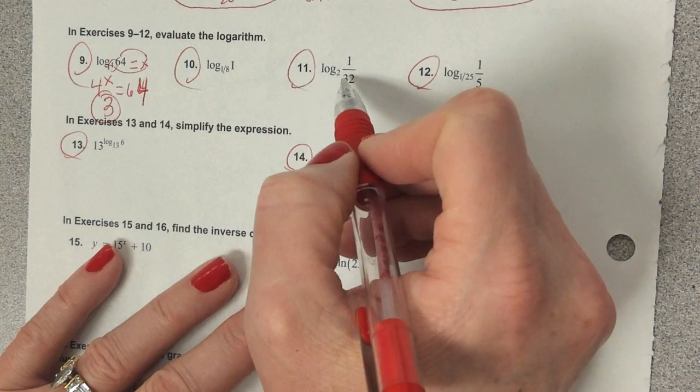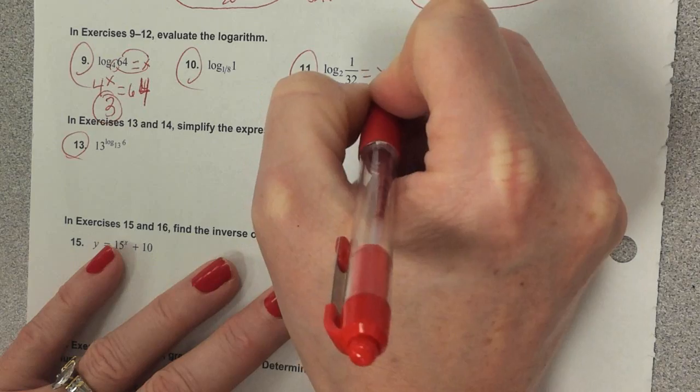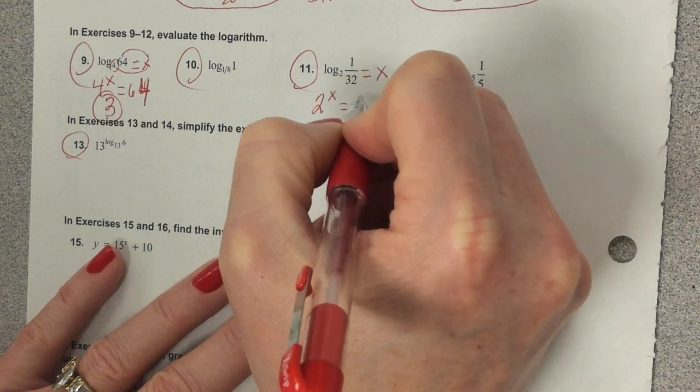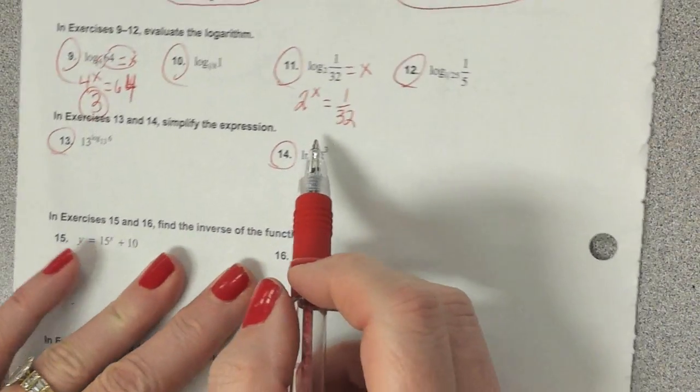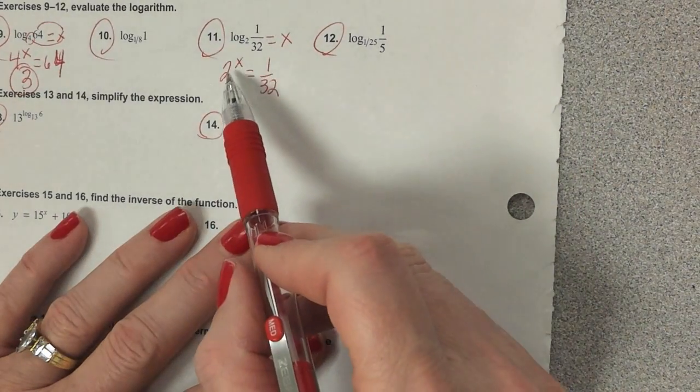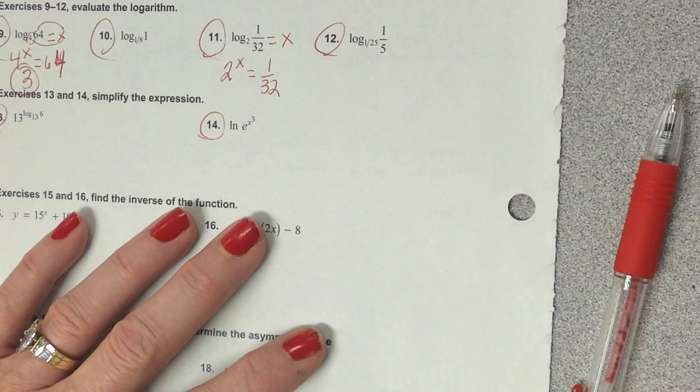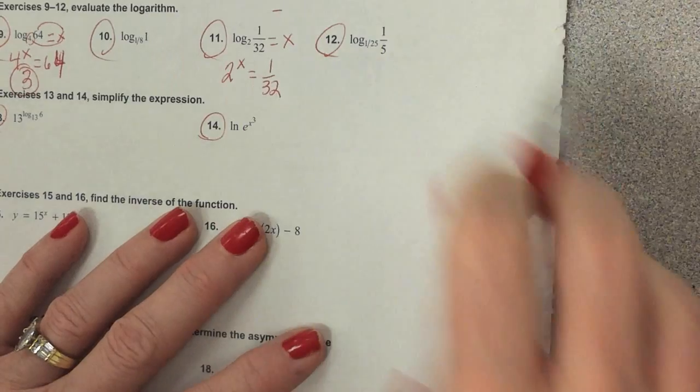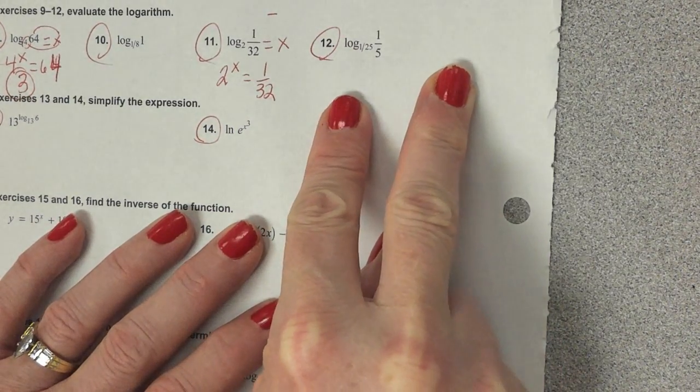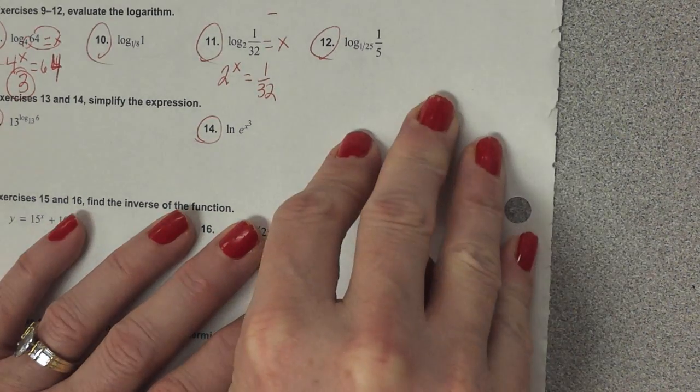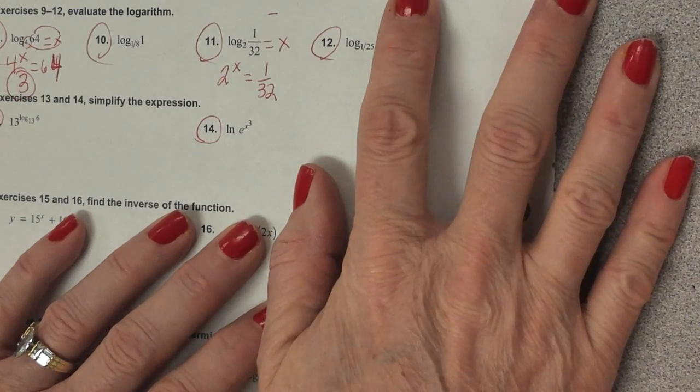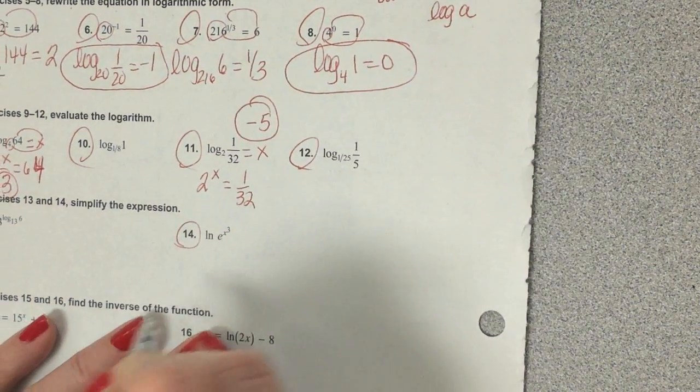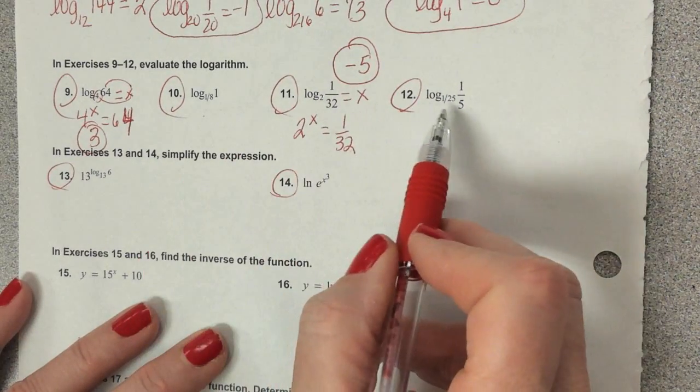Okay. Number 11, figuring this out, I'm going to again set this equal to x. So I'm going to have to do 2 to the what power equals 1 over 32. So thinking about this, first of all, how do I get the 2 to go to the bottom? What's it going to have to be? Negative. So I know the answer has to be a negative. And what is 2 times 2, times 2 again, times 2 again, times 2 again, so there we go. So it's going to be negative 5. All right, you guys do number 10 and 12.